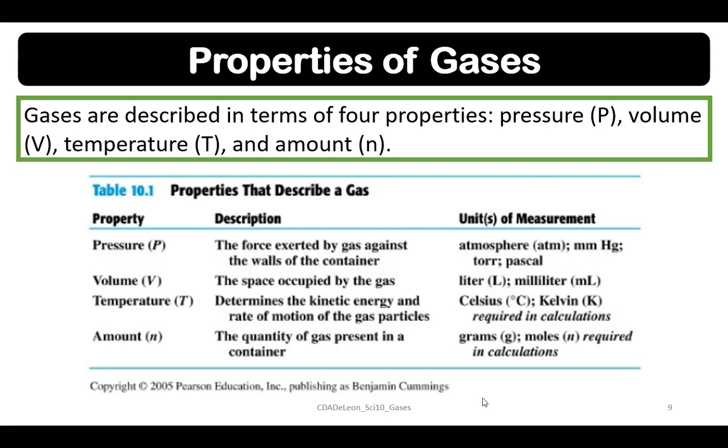Volume is the space occupied by the gas, represented by the units liter and milliliter. Temperature determines the kinetic energy and rate of motion of the gas particles, represented by Celsius, Kelvin, and Fahrenheit. The amount of moles is the quantity of gas present in a container. We have grams and moles, which are required in calculations.